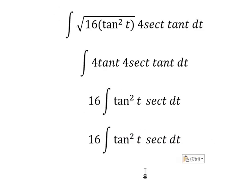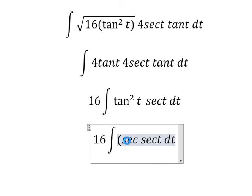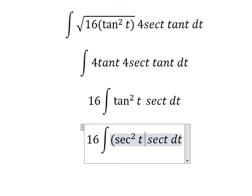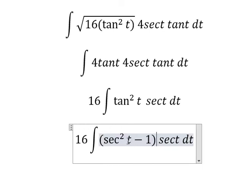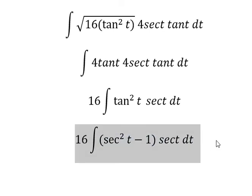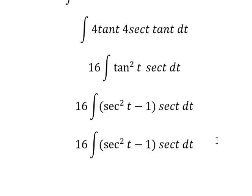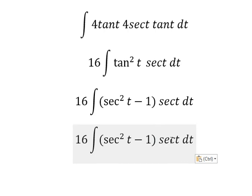For tan²(t), we substitute using the identity: tan²(t) equals sec²(t) minus 1. So we have sec(t) multiplied by sec²(t) minus 1.